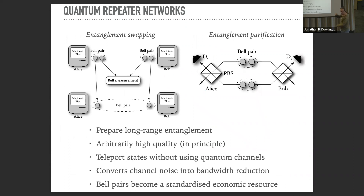So how do we get there? What do we need to add to the existing infrastructure to give it the functionality of end-to-end entanglement links? You need to introduce two new ingredients: entanglement swapping and entanglement purification, because those two things allow us to get arbitrarily high quality bell pairs over arbitrarily long distances in a way that's still efficient in resource usage.